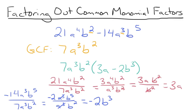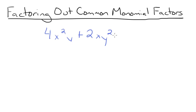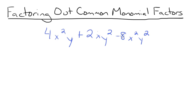Before we go, let's try one last problem. Factor the trinomial 4x squared y plus 2xy squared minus 8x squared y squared. We need to start by finding a common factor between all three terms by finding the GCF of the constants, the x terms, and the y terms. The GCF of 4, 2, and 8 is 2.